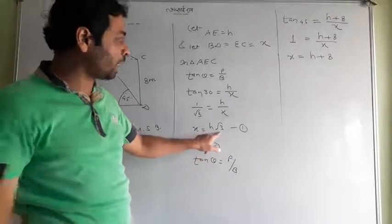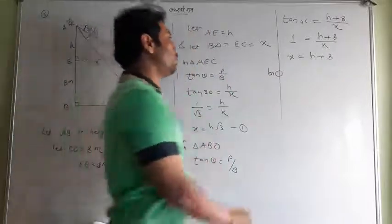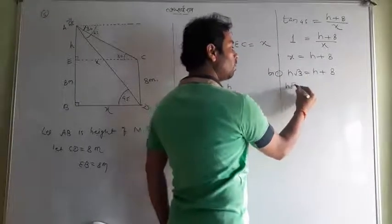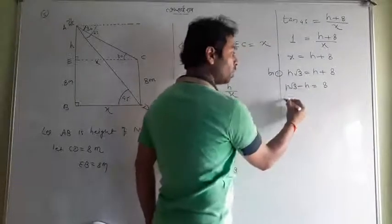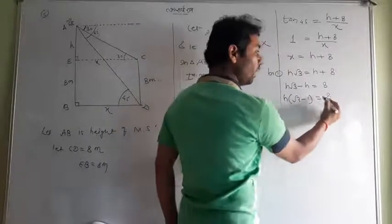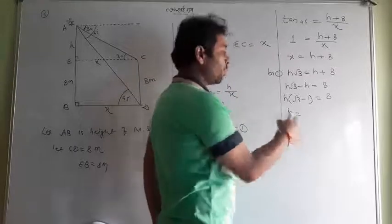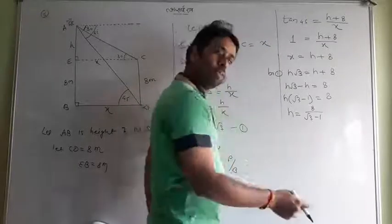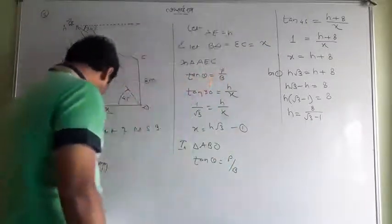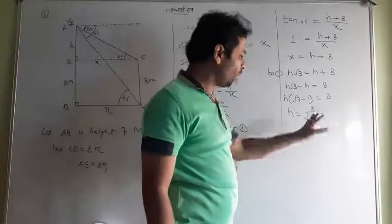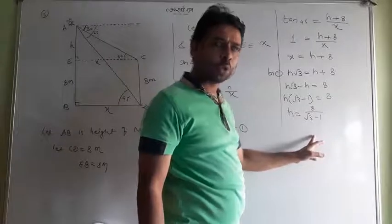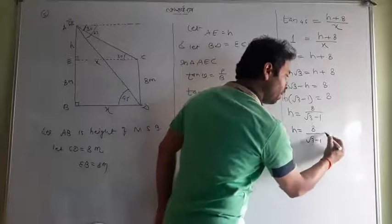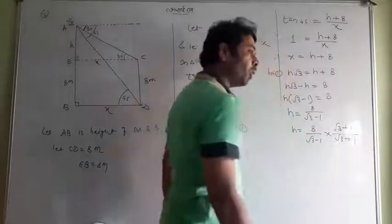From Equation 1, X = H√3. Substituting into Equation 2: H√3 = H + 8. Rearranging: H√3 − H = 8, so H(√3 − 1) = 8, giving H = 8/(√3 − 1). Since √3 is in the denominator, we rationalize. Since the sign is minus, multiply and divide by (√3 + 1).